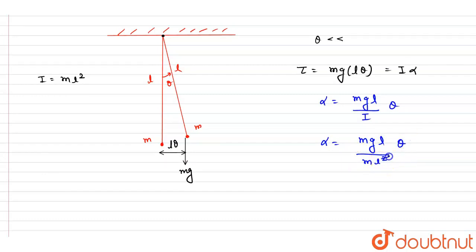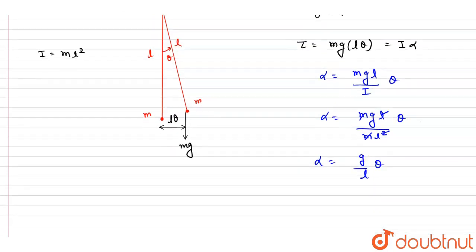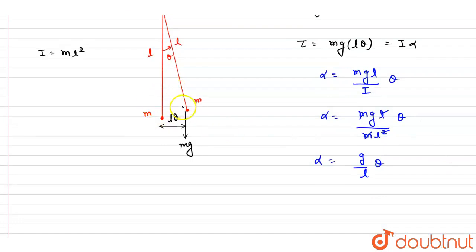So if you see, this l and l, this g and g will get cancelled out. And you will get this alpha is equals to g by l theta. And you can see here, the alpha will be in opposite direction to that of the theta, so we will put the minus sign here as well.